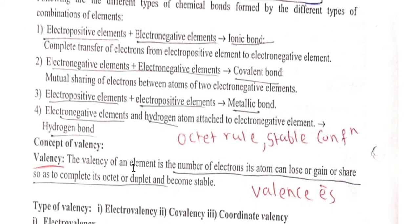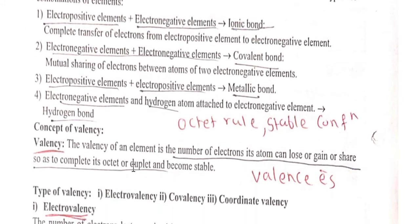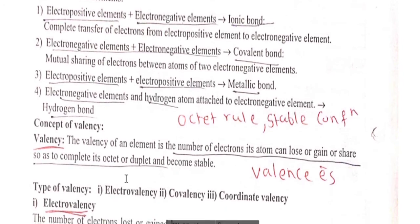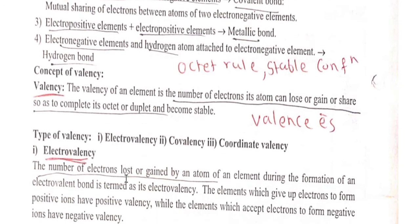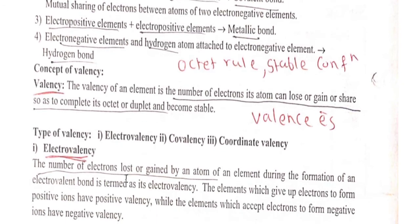Valency is the number of electrons lost, gained, or shared to complete the octet. It is known as valency. Types of valency are: electrovalency, covalency, and coordinate valency.